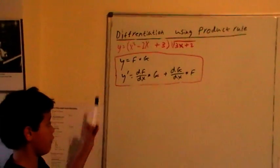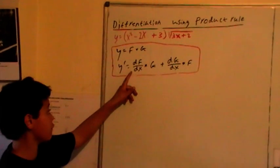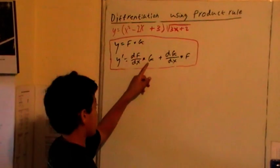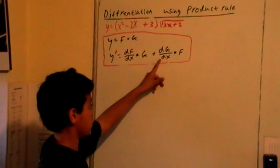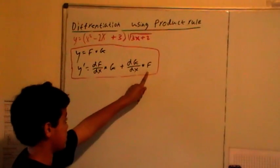The differentiation of that product function is df over dx, which is f dash, times g, plus dg over dx, which is g dash, times f.